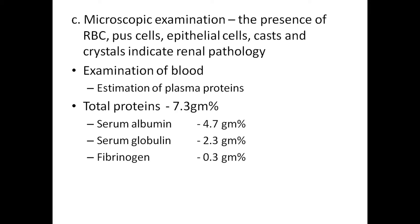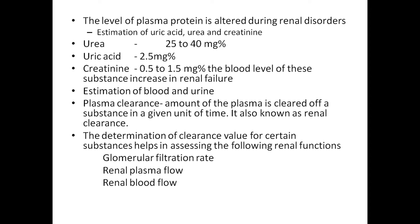Examination of blood includes estimation of plasma proteins: total protein is 7.3 g%, serum albumin is 4.7 g%, serum globulin is 2.7 g%, and fibrinogen is 0.3 g%. The level of plasma protein is altered during renal disorders. Estimation of uric acid, urea, and creatinine: urea is 25–40 mg%, uric acid is 2.5 mg%, creatinine is 0.5–1.5 mg%. The blood levels of these substances increase in renal failure.